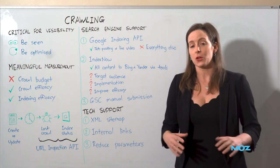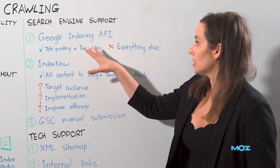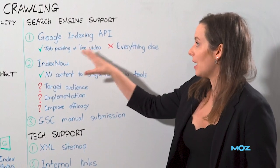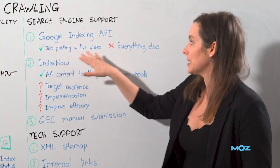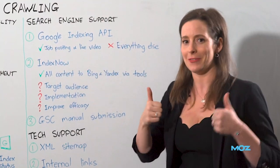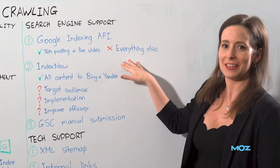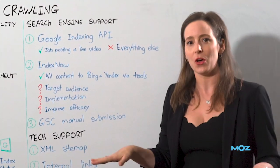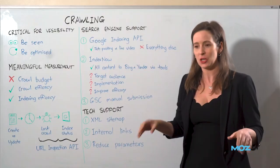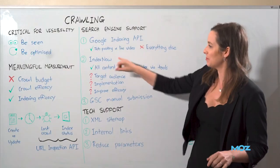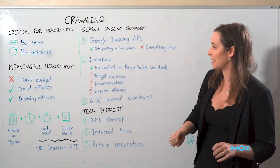Long story short: Google Indexing API for job postings and live videos — very good. Everything else, not worth your time. Let's move on to IndexNow.